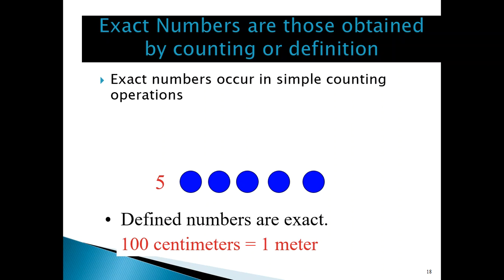Another example is the relationship between the centimeter unit and the meter unit — again, that's by definition, and therefore the 100 and the one in that relationship are exact numbers. It is very important — and you're going to see this become important in future problem-solving exercises — that whenever you are doing calculations, you determine which numbers are exact and which numbers are measured. That will become especially important when rounding off numbers to the correct number of significant figures obtained from a calculation.